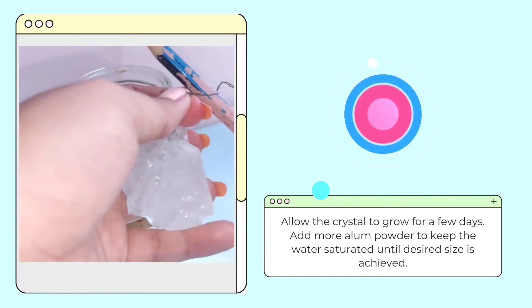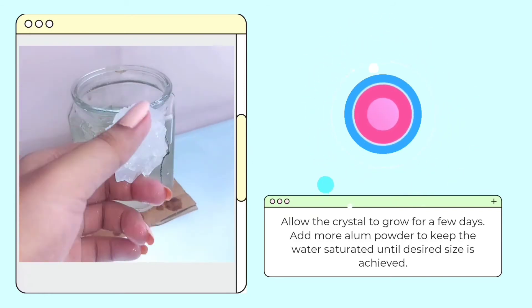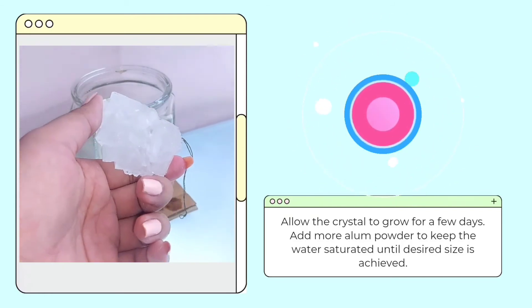To keep it growing, simply repeat the step before this. If desired size is achieved, remove from the solution and allow it to dry.